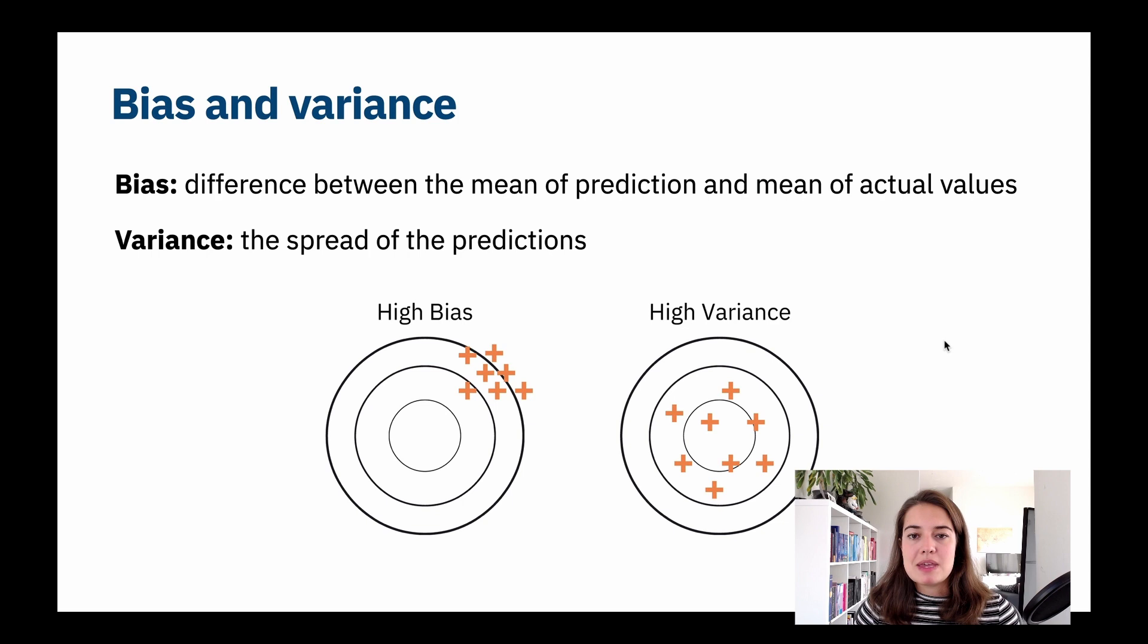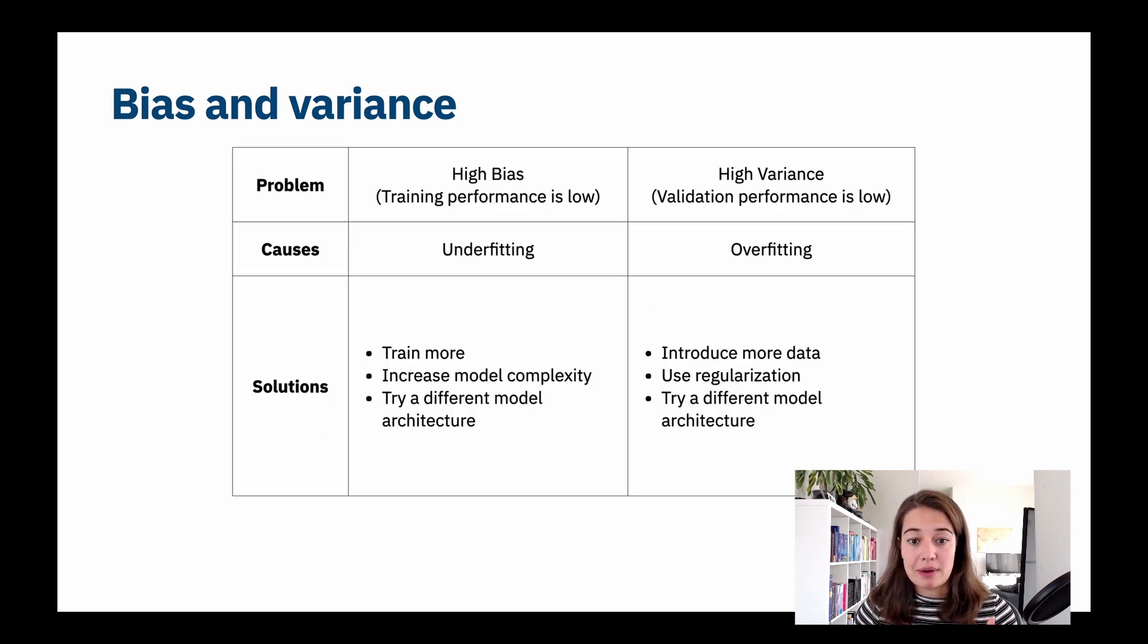So but what does that mean? How does that map to overfitting, underfitting, what's happening? So these are actually really closely related to overfitting and underfitting. If we have high bias, that means that our training performance is going to be low. And that means we're underfitting, as in we're not able to fit the data at all. If you have high variance, that means that our validation performance is going to be very low compared to the training performance. And that means that we are overfitting.